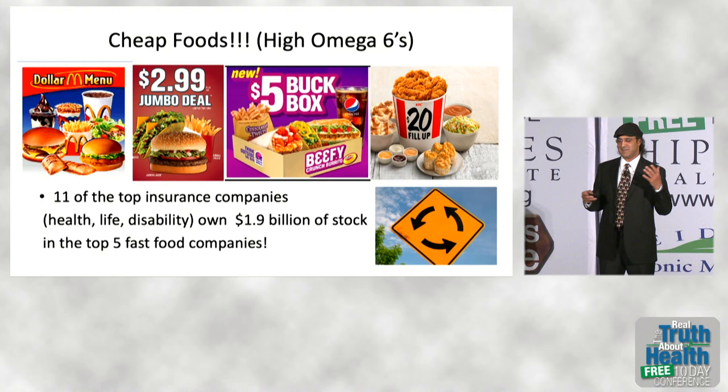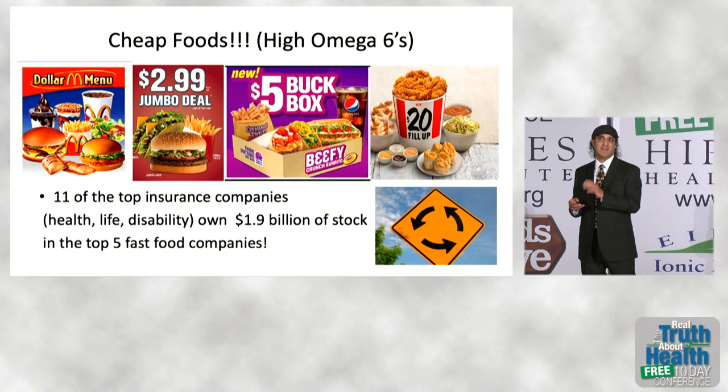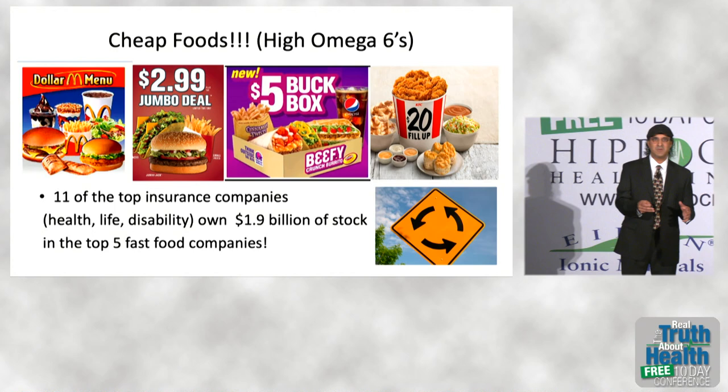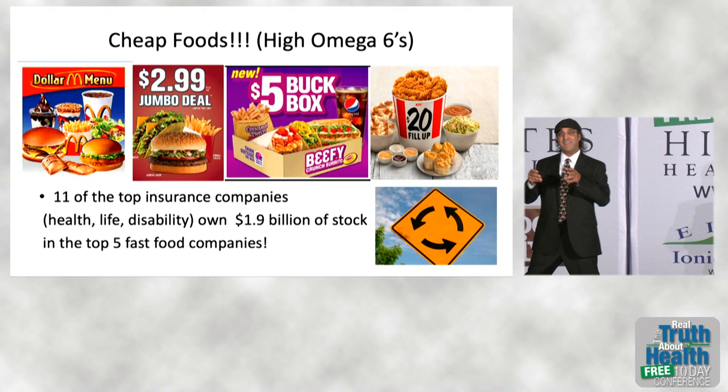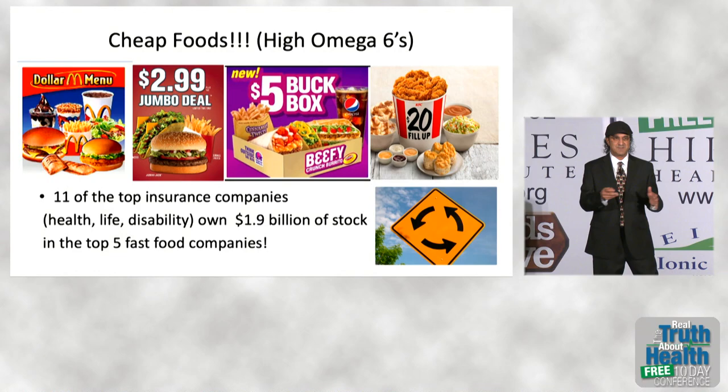To get you into a bit of political activism: 11 of the top insurance companies own about $2 billion of stock in the top five fast food companies. They're having you buy cheap food that makes you sick, which forces you to pay higher premiums, higher copays, higher deductibles, and now you have a pre-existing condition they charge you even more for. There's no health in healthcare anymore. We have to look at how we can change the system.